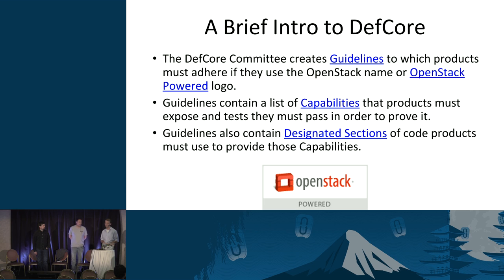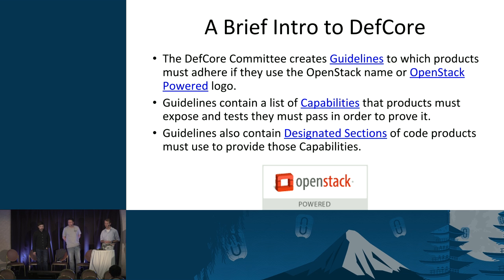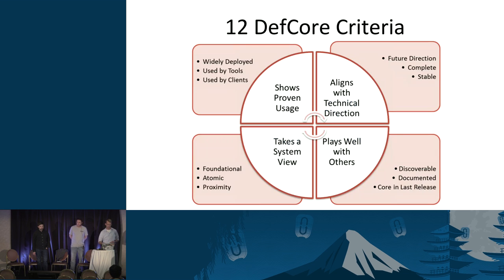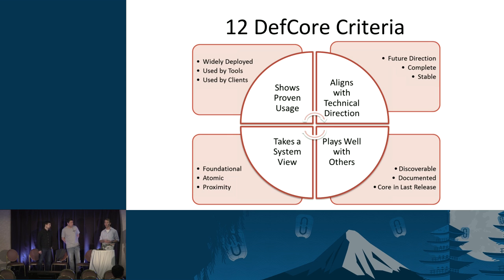Designated sections basically say that if you're exposing a capability, you should be using OpenStack code to do it. You can't go write OpenStack in Java and call it OpenStack, because that's not what we are. Products that want to use either OpenStack in their product name or that want to get that logo from the foundation have to adhere to this. The end user case is that all those capabilities can be counted on if you're using any product that bears that logo.